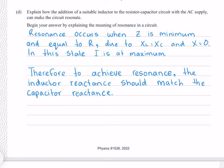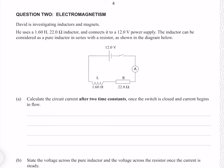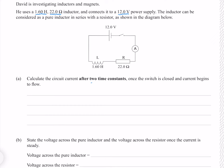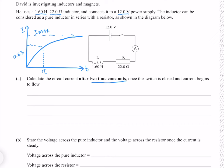Question 2. David is investigating inductors and magnets. He uses a 1.60 henry, 22 ohm inductor connected to a 12 volt power supply, modelled as a pure inductor in series with a resistor. Calculate the circuit current after two time constants once the switch is closed. Imagining a graph of current against time, the current increases exponentially toward I maximum, and the time constant is the time for a 63% change. Our first step is to find maximum current.